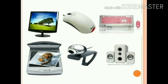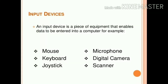As you can see in this picture, there are input devices and output devices. Now firstly we will discuss about the input devices. An input device is a piece of equipment that enables data to be entered into a computer — jiske through hum data ko computer mein enter karte hai. They all are called input devices: mouse, keyboard, joystick, microphone, digital camera, and scanner.